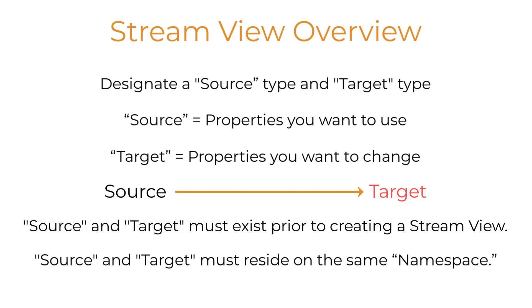You assign the StreamView to a stream so that it appears as if you've changed a type on which it's based. In reality, the type has not been changed at all. You've just created a different view of the stream.